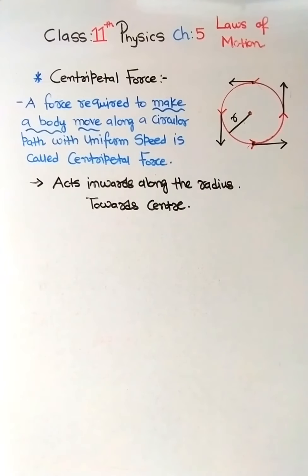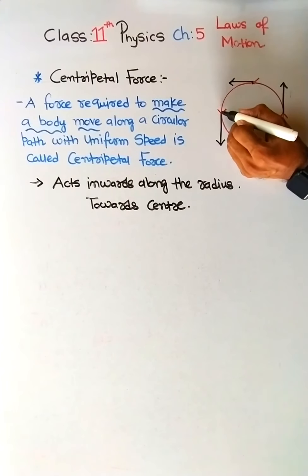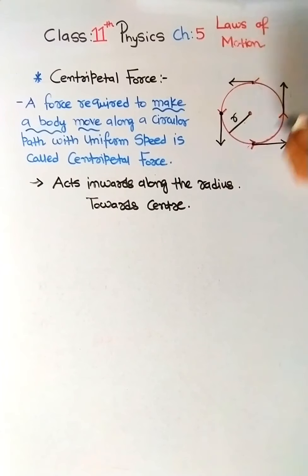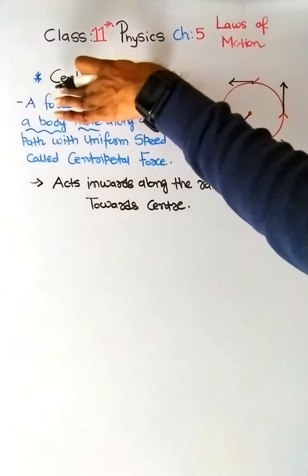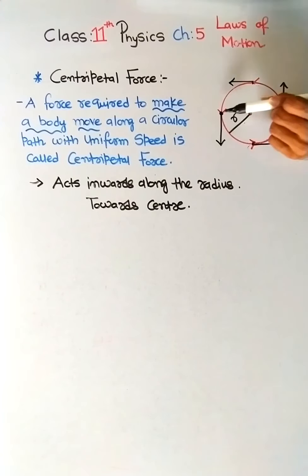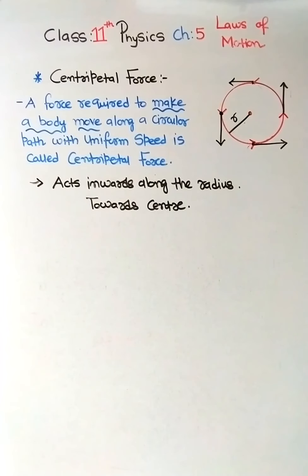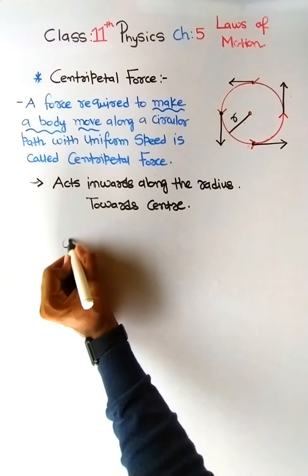Suppose there is an object performing uniform circular motion along a path of radius R. At each point the object will have a separate direction — the direction of motion will be along the tangent. Without centripetal force, the object would skid away from the path and go in the tangential direction. So it is the centripetal force which keeps the object moving in the circular path.